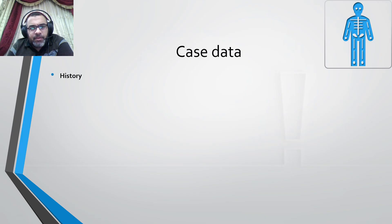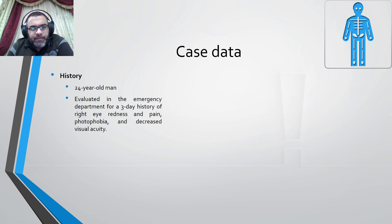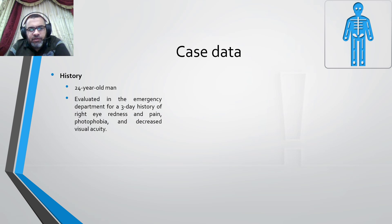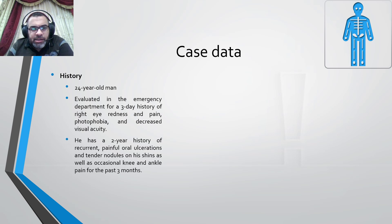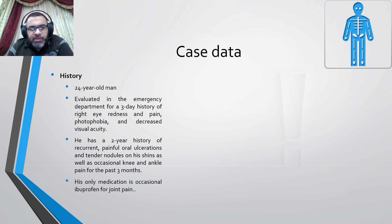Case data: a 24-year-old male evaluated in the emergency department for a three-day history of right eye redness, pain, and photophobia with decreased visual acuity. He had a two-year history of recurrent painful oral ulcerations and tendon nodules on his chin, as well as occasional knee and ankle pain for the last three months. His only medication is occasional ibuprofen for joint pain.